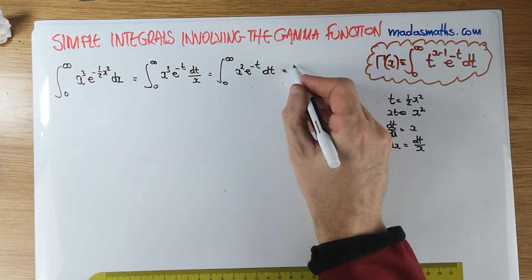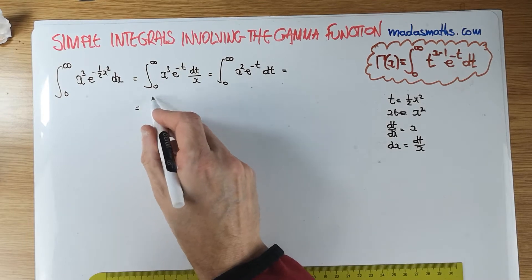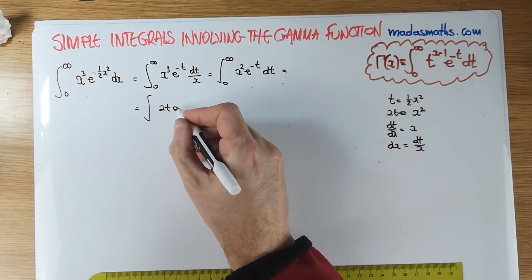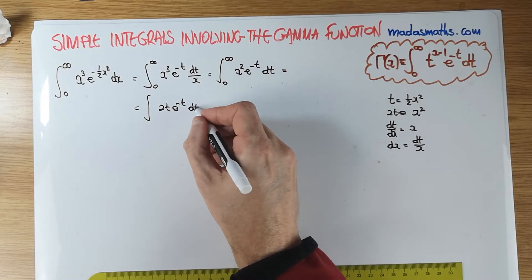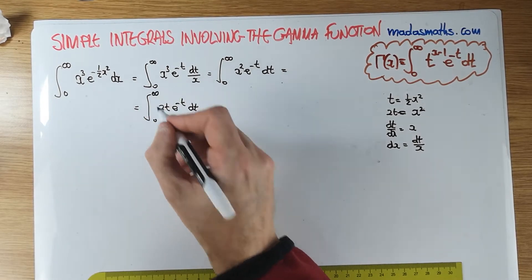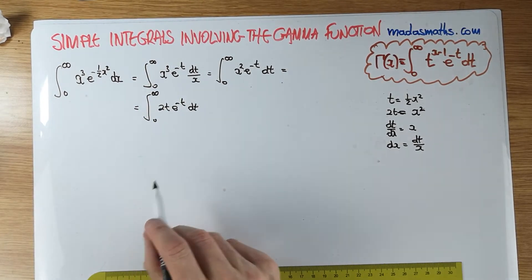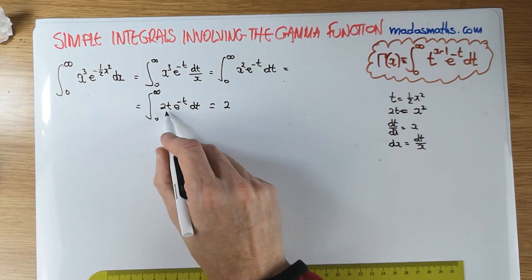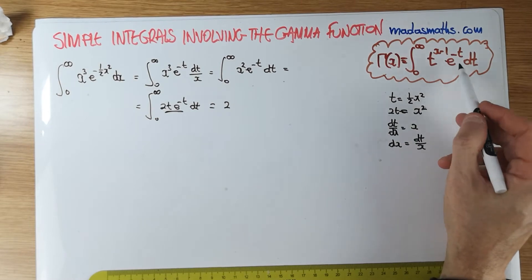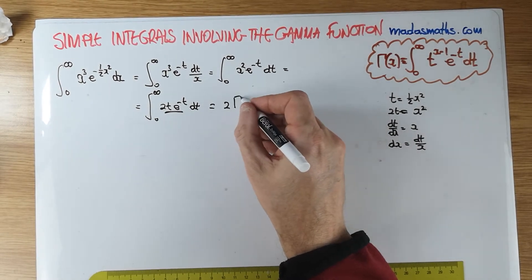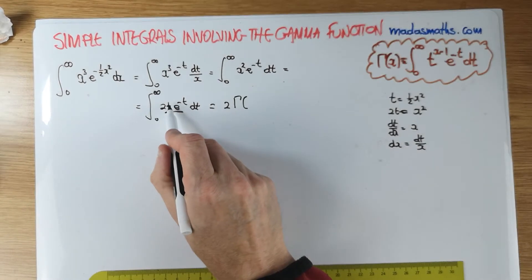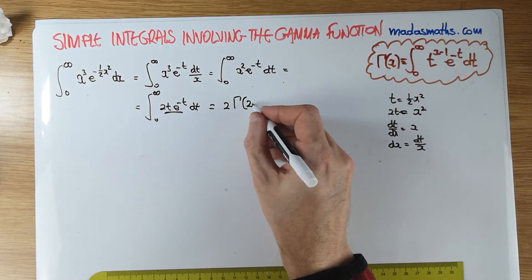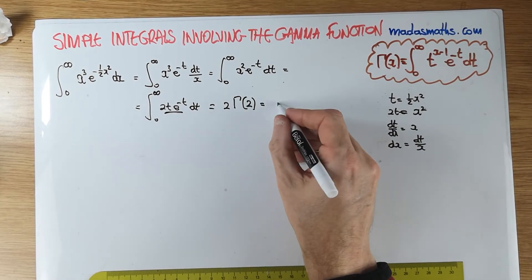So we can actually say that is equal to, let's put it on the next line, 2t e to the minus t dt, 0 to infinity. And of course, this is a gamma function. That is a multiplicative constant at the front. It's a 2. And this bit here, when compared with this line here, should be the gamma of 1 more than what we're seeing in here. So it's t to the 1, so it's the gamma of 2.